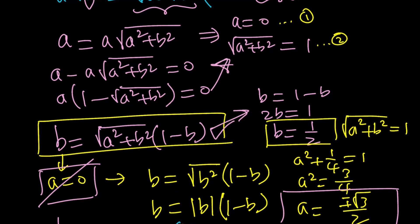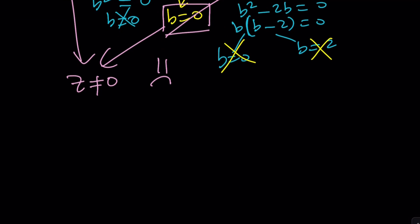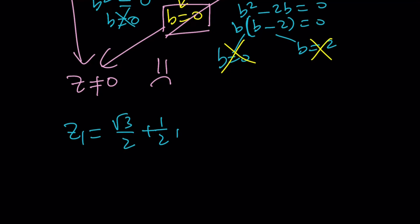Let's summarize the results. Z sub 1 is root 3 over 2 plus one half i, and Z sub 2 is negative root 3 over 2 plus one half i. The imaginary parts are the same and the real parts are negations of each other. We'll also check the results from Wolfram Alpha shortly — make a guess: do you think Wolfram Alpha can solve this problem?